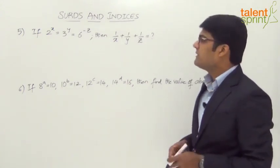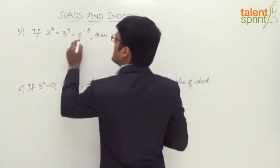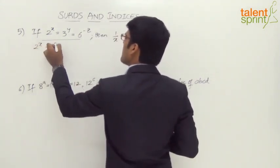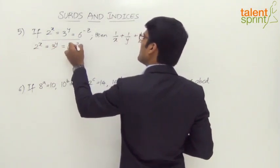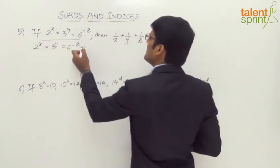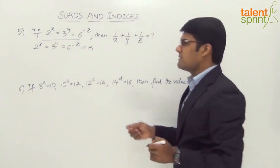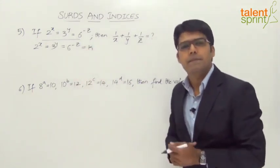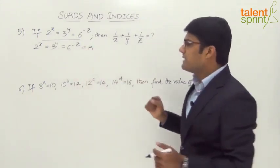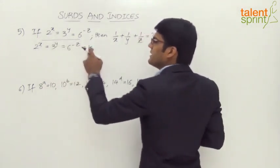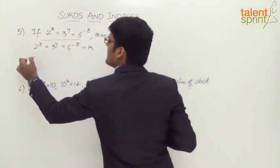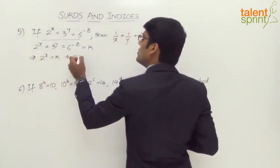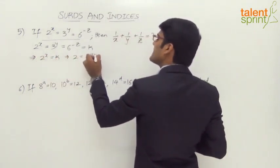So how do we go ahead with this? Look at this equation: 2^x = 3^y = 6^(-z). Let us assume this is equal to k. Since all three terms are equal, let us assume that this is a constant value k. Now, when we say 2^x = k, that implies 2 = k^(1/x).